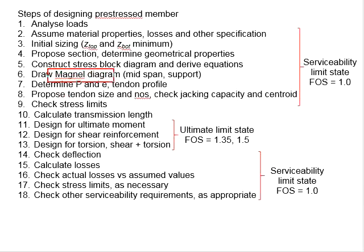Draw the Magnel diagram, propose P and e, determine the tendons, and check the stress limits. If the stress limits fail, you will need to restart the step here to repropose a new section. This process will loop continuously until you obtain the stress within the limits.